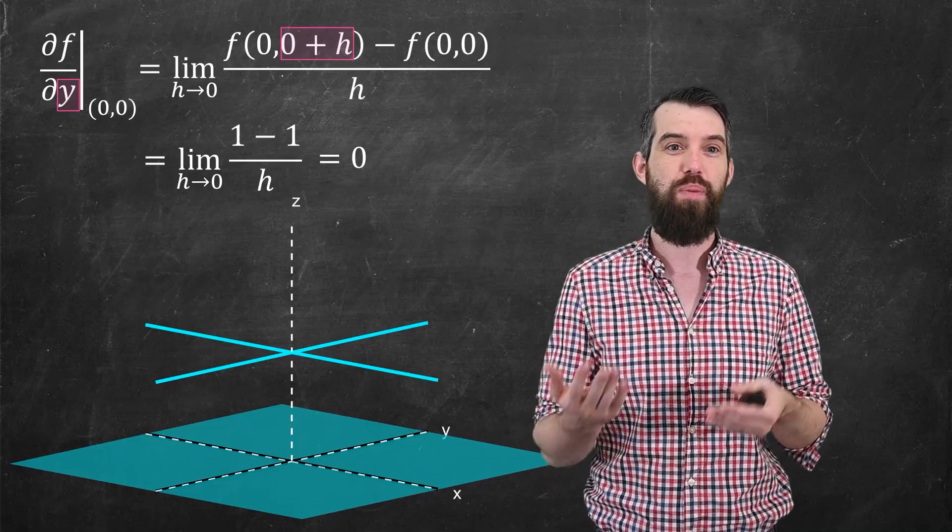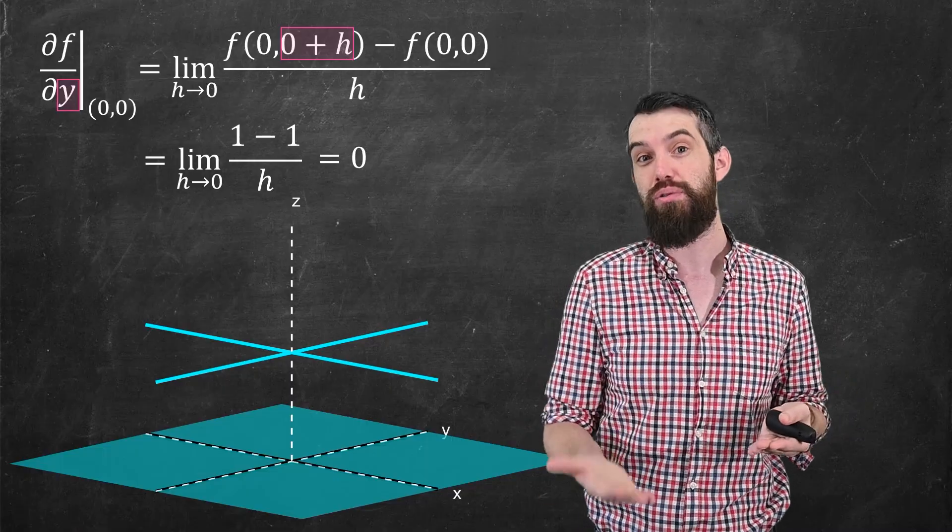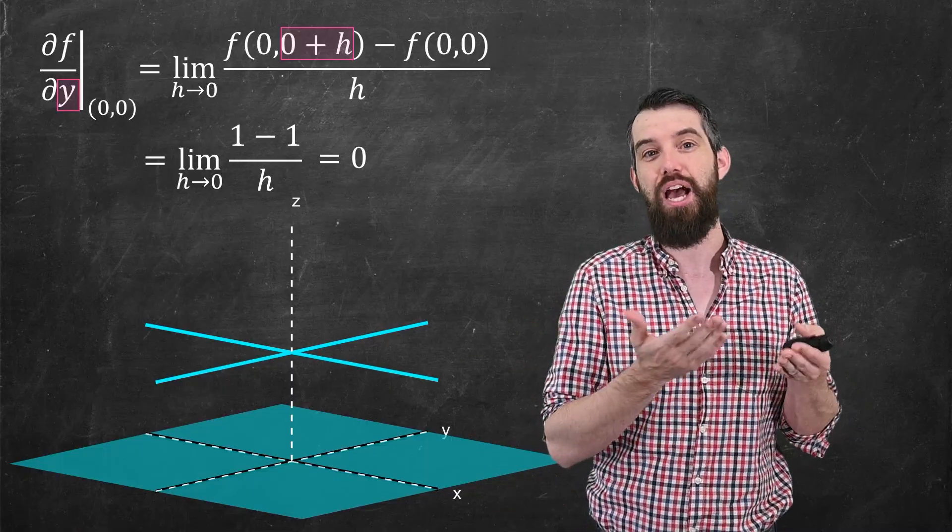And a limit of 0. So both the partial derivative with respect to x and the partial derivative with respect to y, both of those exist and are equal to 0.